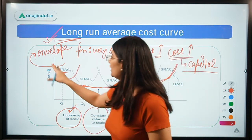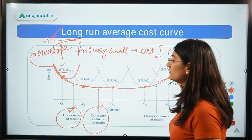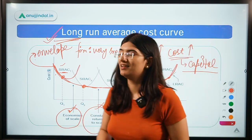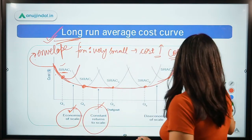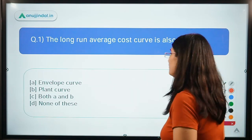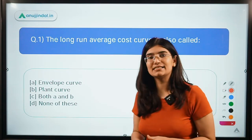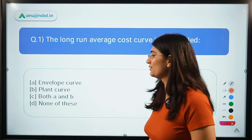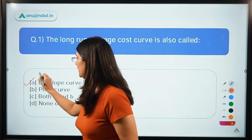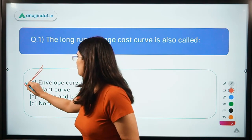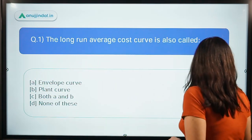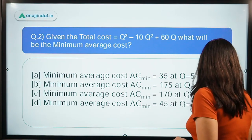Now you know that the long-run average cost curve actually envelopes your short-run costs. So the correct answer to question one is A — envelope curve. Let us move on to the next question.